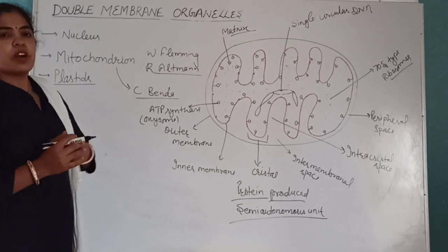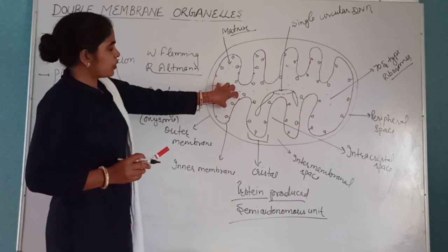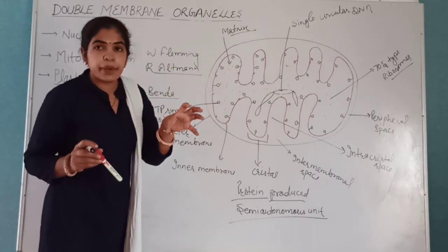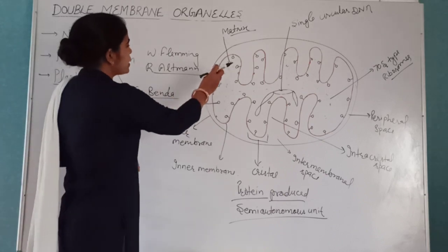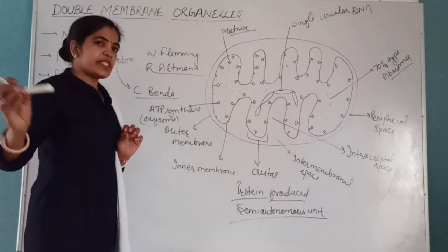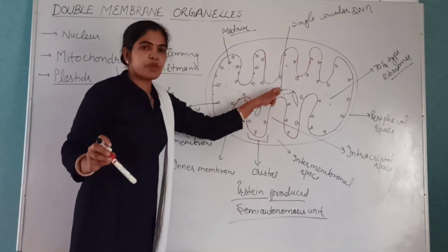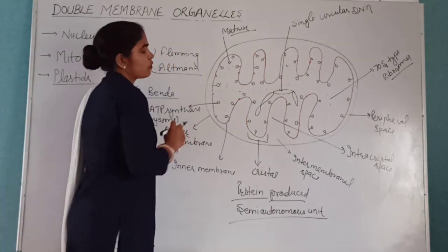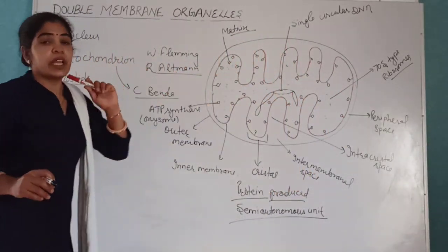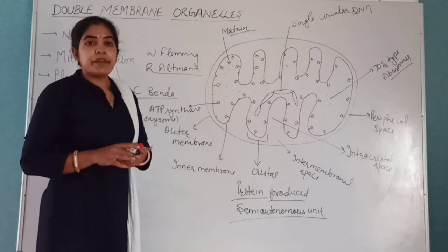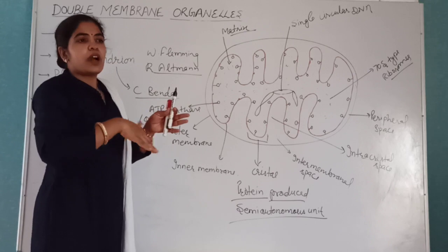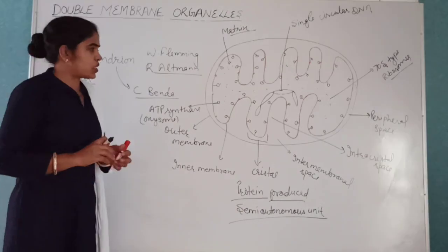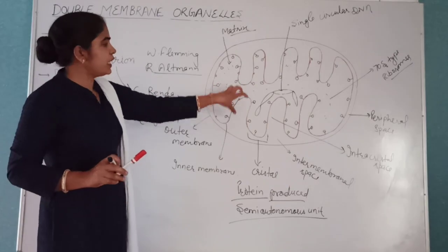Regarding the origin of mitochondria, if we compare mitochondria with a prokaryotic cell, we find similarities: prokaryotes have membrane infoldings called mesosomes, and mitochondria also have inner membrane foldings with enzymes for aerobic respiration. Prokaryotes have single circular DNA and 70S ribosomes — mitochondria have the same. This suggests that if a prokaryotic cell entered another cell and formed a symbiotic association, it could start functioning as an energy-producing organelle — mitochondria.